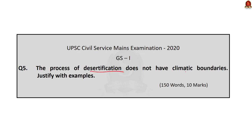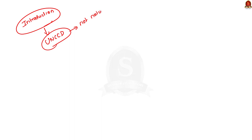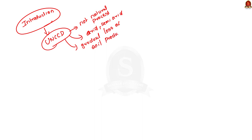Now moving on to the next question: The process of desertification does not have climatic boundaries. Justify with examples. For the introduction, you can use your own words or the official definition by the United Nations Convention to Combat Desertification (UNCCD). According to UNCCD, desertification is not a natural process but the degradation of land in arid, semi-arid, and dry sub-humid areas — a gradual loss of soil productivity and thinning of vegetative cover because of human activity or climate variations like prolonged droughts or floods.